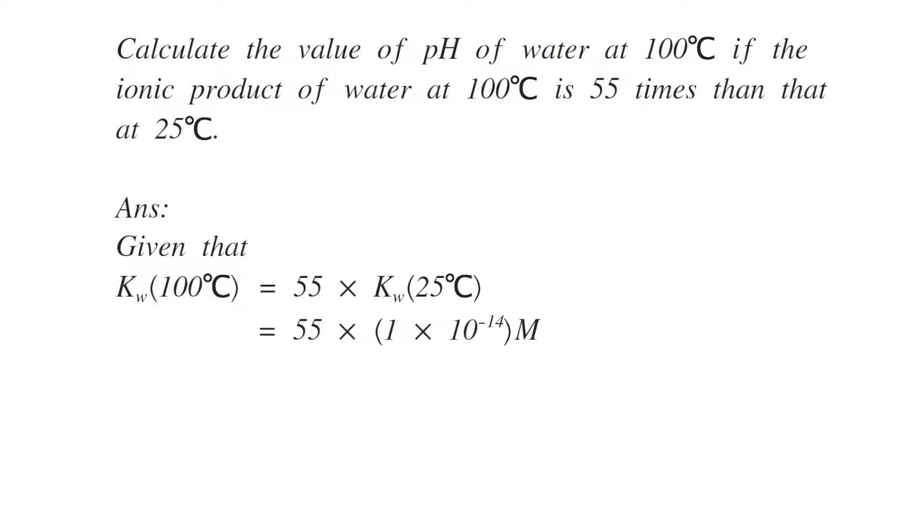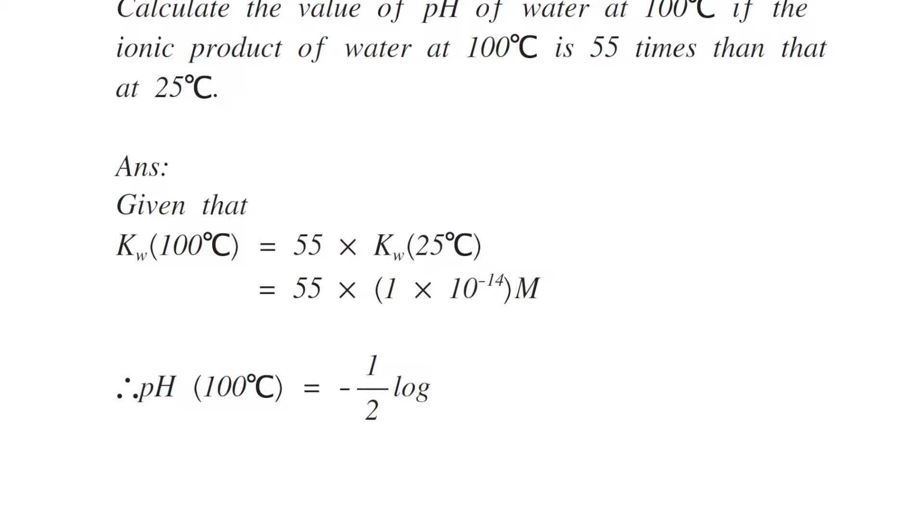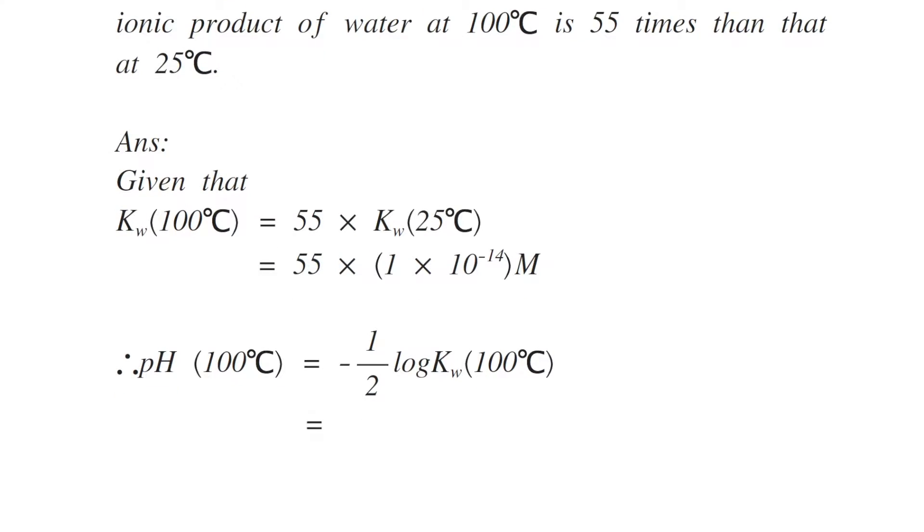Let's calculate the pH at 100 degrees Celsius. pH can be given as, the formula is equals to -1/2 log of Kw at 100 degrees Celsius. Let's substitute the value of Kw at 100 degrees Celsius.